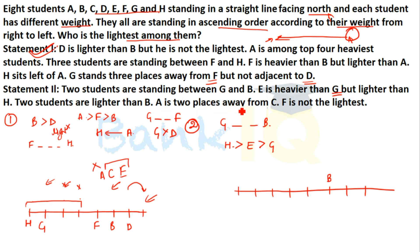A is two places away from C. F is not the lightest.